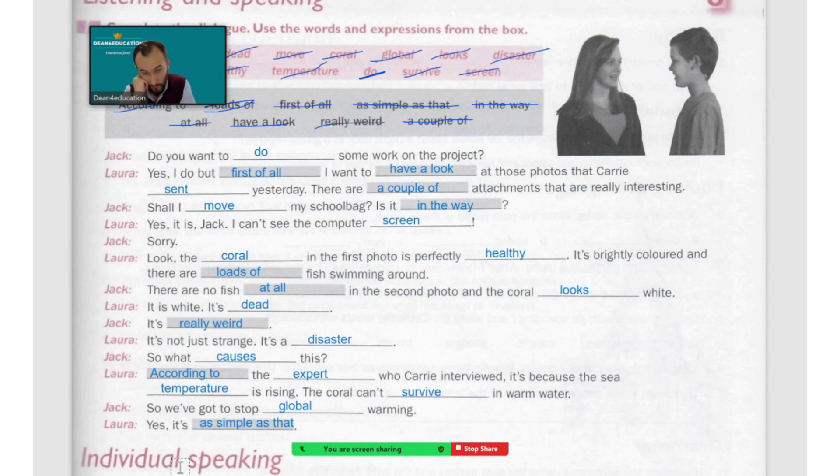According to the experts who Kerry interviewed, it's because the sea temperature is rising. The coral can't survive in warm water.